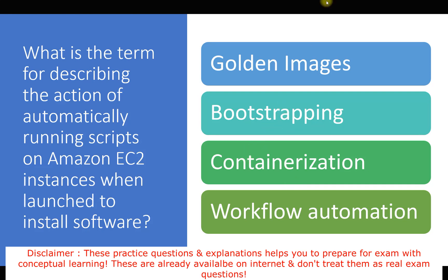Golden images are snapshots of pre-configured EBS volumes, normally used to launch new EC2 instances — similar to Amazon Machine Images (AMIs). Bootstrapping is the execution of automated actions on services like EC2 or RDS, typically in the form of a script that runs when the instance is launched.